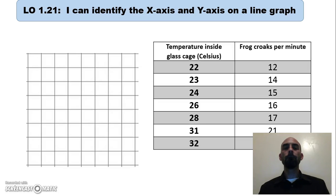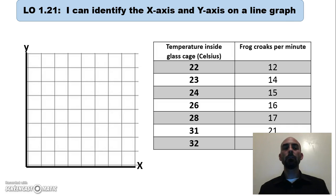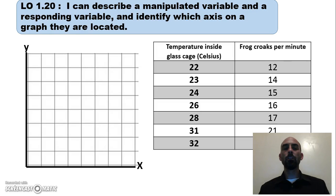Let's look at the frog data. The x-axis is side to side or horizontal, and the y-axis is up and down, vertical. Looking at the data, the variable changed on purpose by the experimenter was the temperature inside the cage — that's the manipulated variable on the x-axis. In response, the frogs' croaks per minute changed, and that goes on the y-axis.